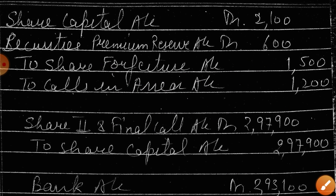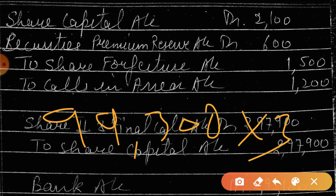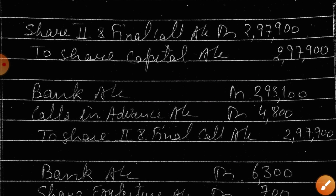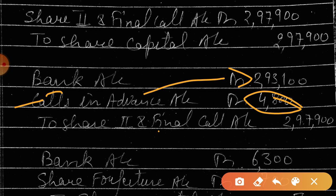Now what was written in the question? They have asked for the second call — second call is made from remaining holders. How many shares are remaining? 99,300. So 99,300 into 3. Those who paid in advance will not pay now — their amount will be utilized now. That's why calls in advance will be debited.